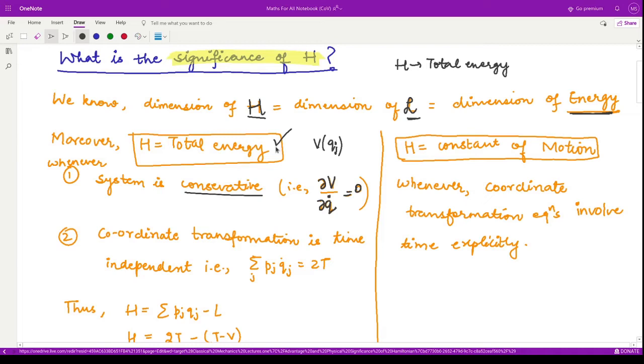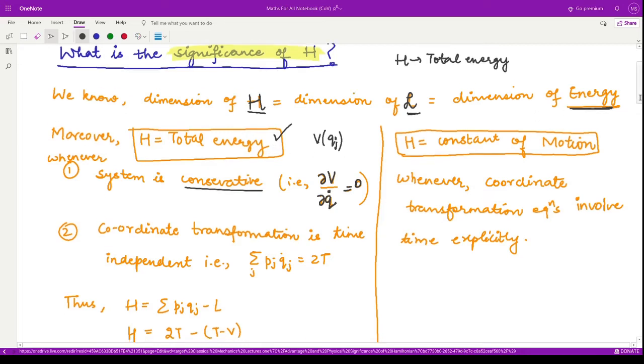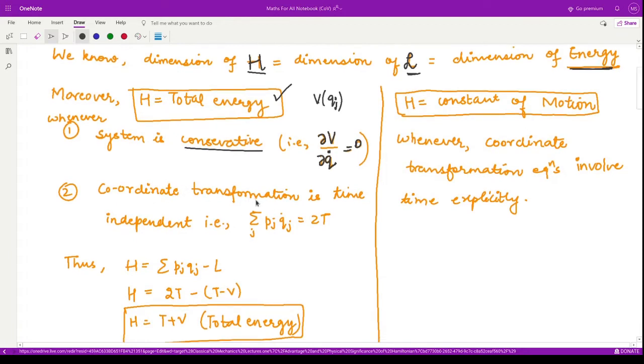For conservative systems, Hamiltonian represents the total energy of the system. Moreover, when we apply the coordinate transformation, that transformation is time independent.